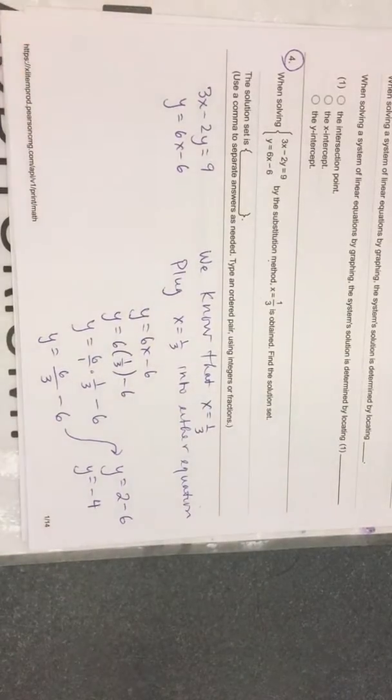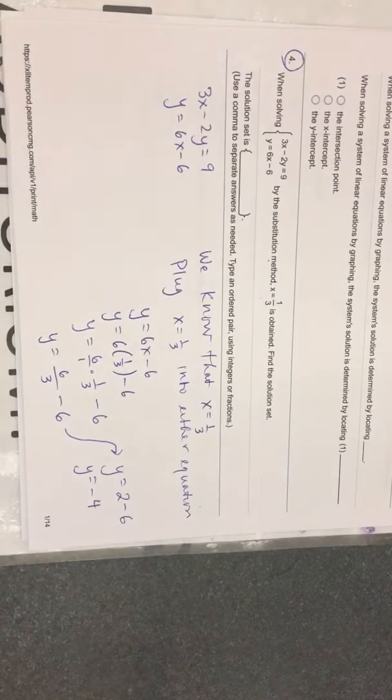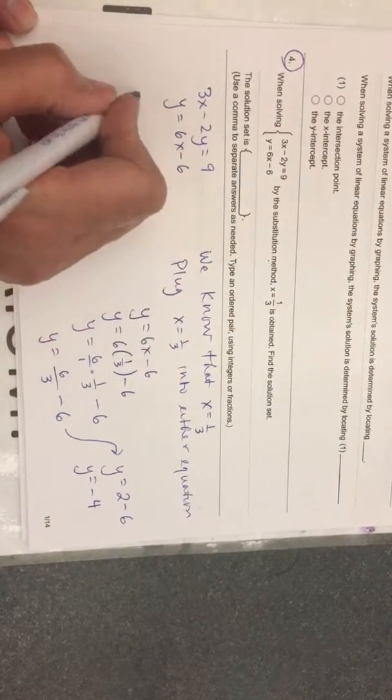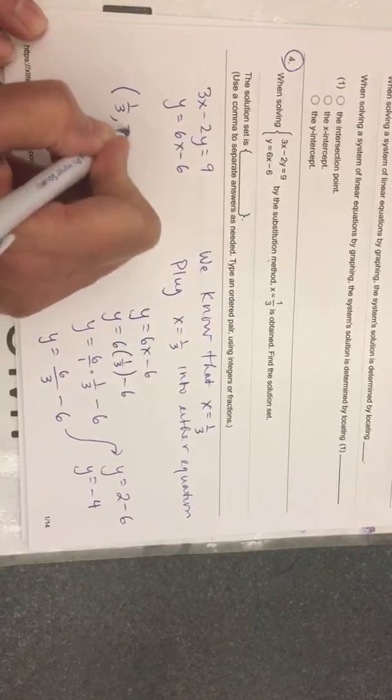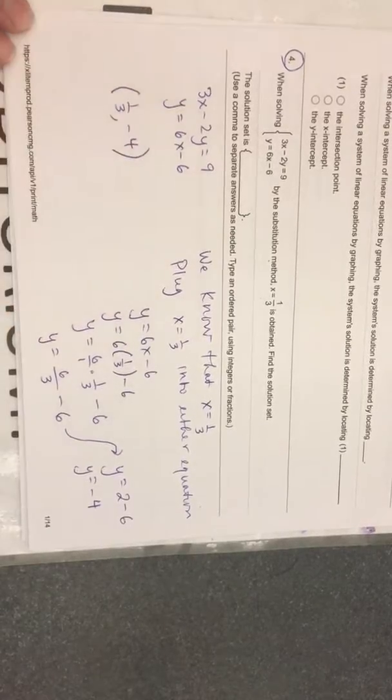They want you to type an ordered pair. In the box, parentheses, one-third, comma, negative 4, close parentheses.